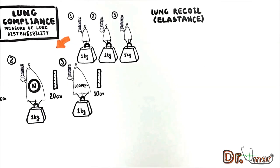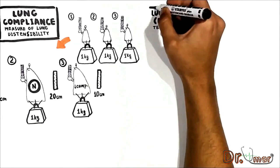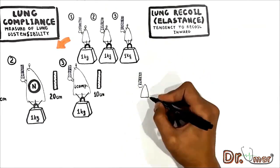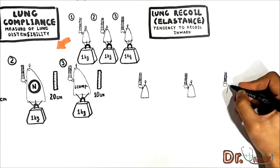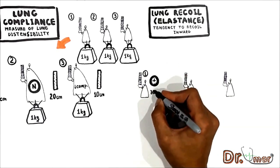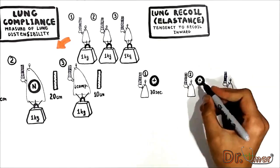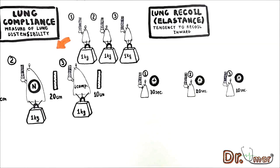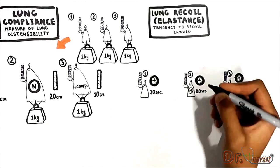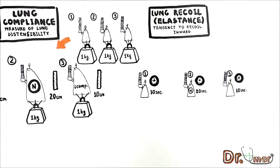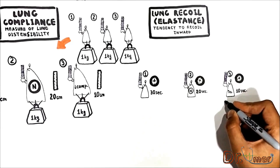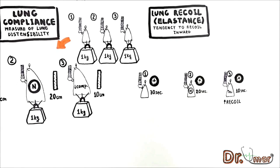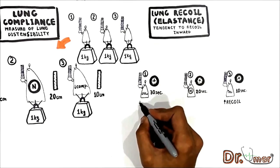Elastance is the inverse of compliance. It is the tendency of the lung to recoil inward. Suppose I remove the weights from all the lungs and they start collapsing. The first lung completely collapses in 30 seconds, the second in 20 seconds, and the third in 10 seconds. Considering the second lung as normal, the third lung is more elastic because it collapses faster. The faster it recoils, the more elastic it is — the recoil force is largest in the third lung.